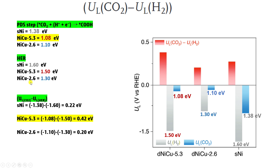We can now calculate the selectivity: which reaction is favored — hydrogen evolution or CO2 reduction? The formula is UL(CO2) minus UL(HER). For the single nickel atom catalyst: 1.38 minus 1.60 equals 0.22 eV. The reason we use negative signs is because we must provide that energy to overcome the barrier — limiting potentials always carry a negative sign.